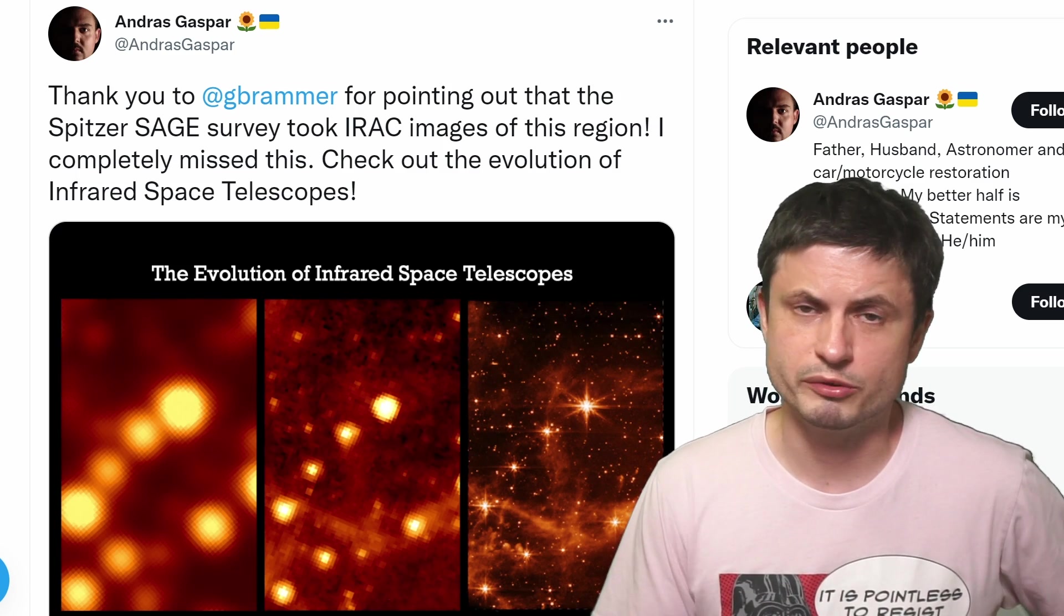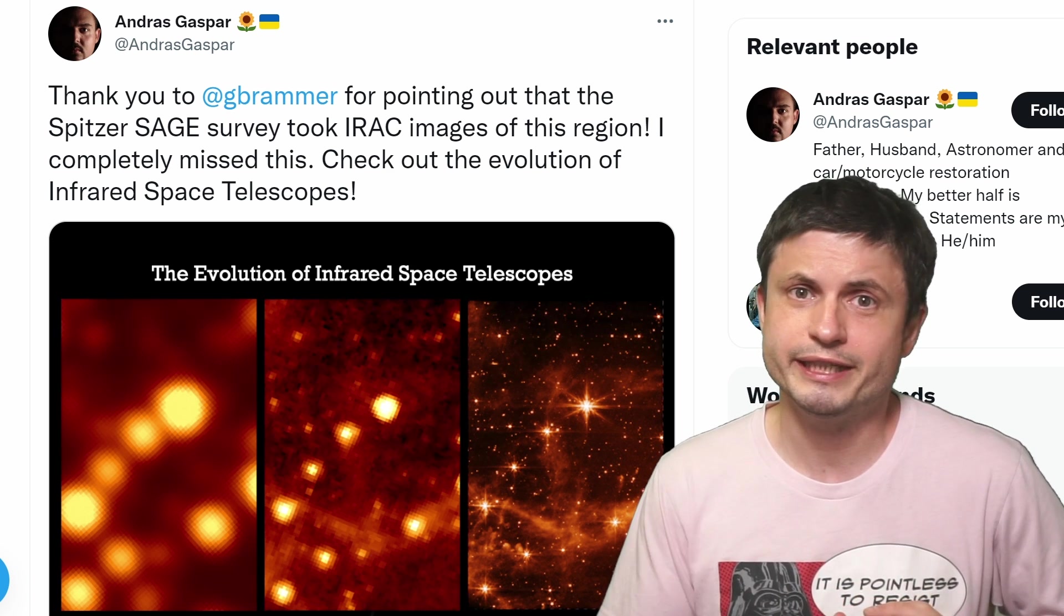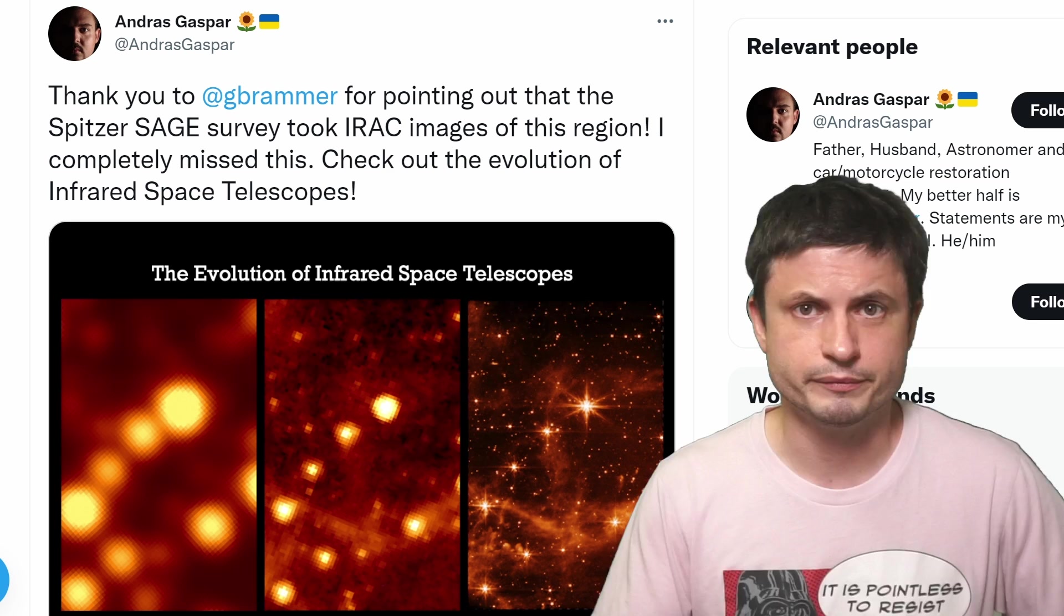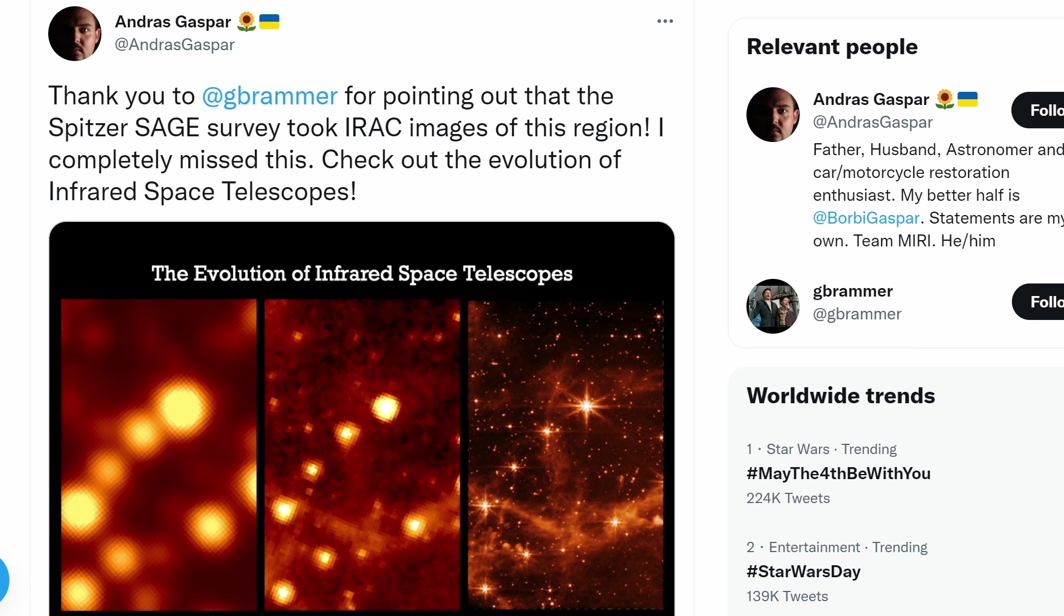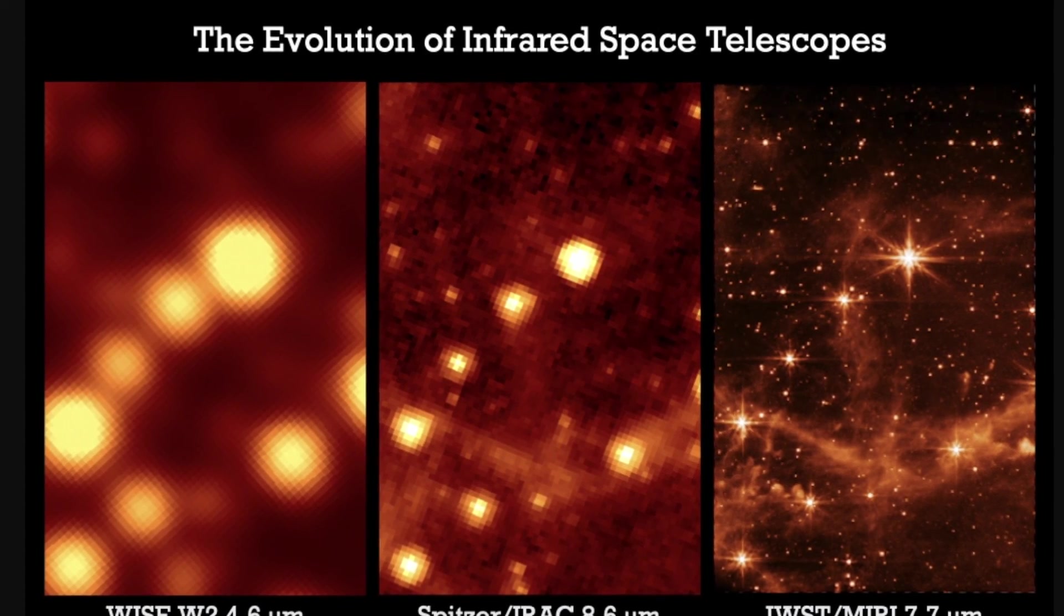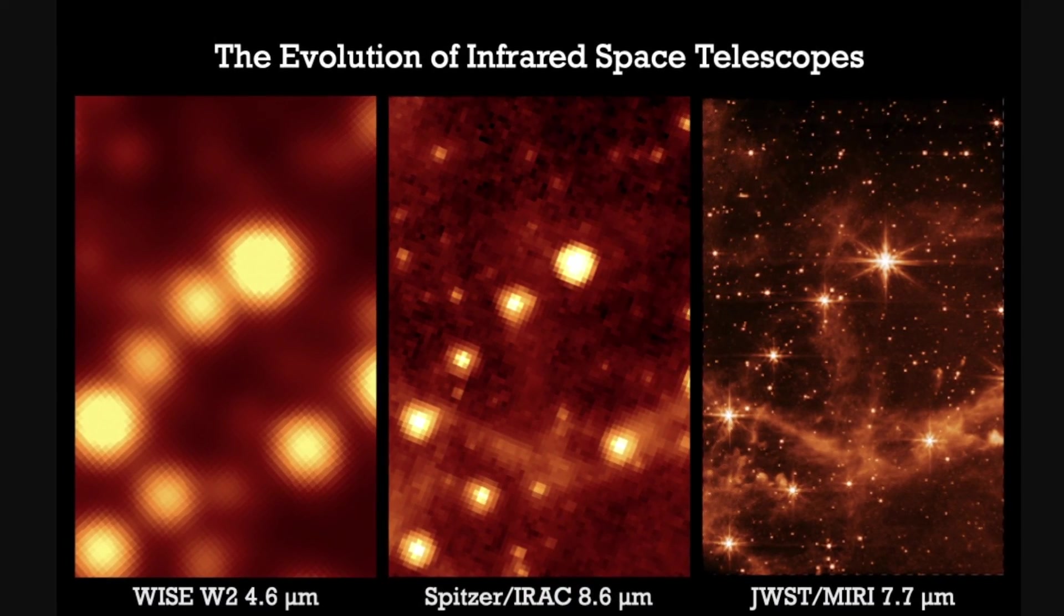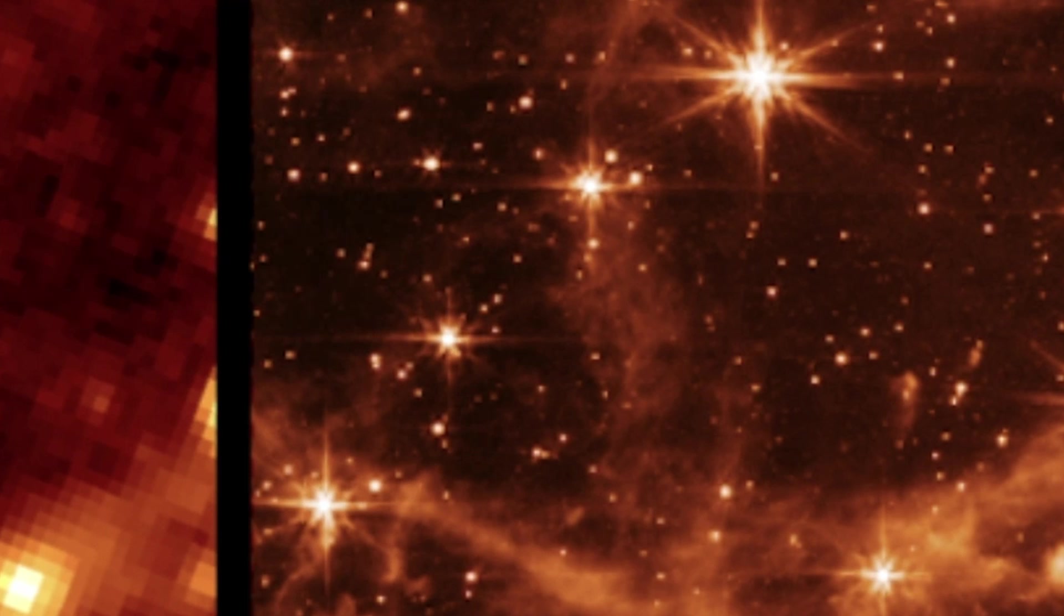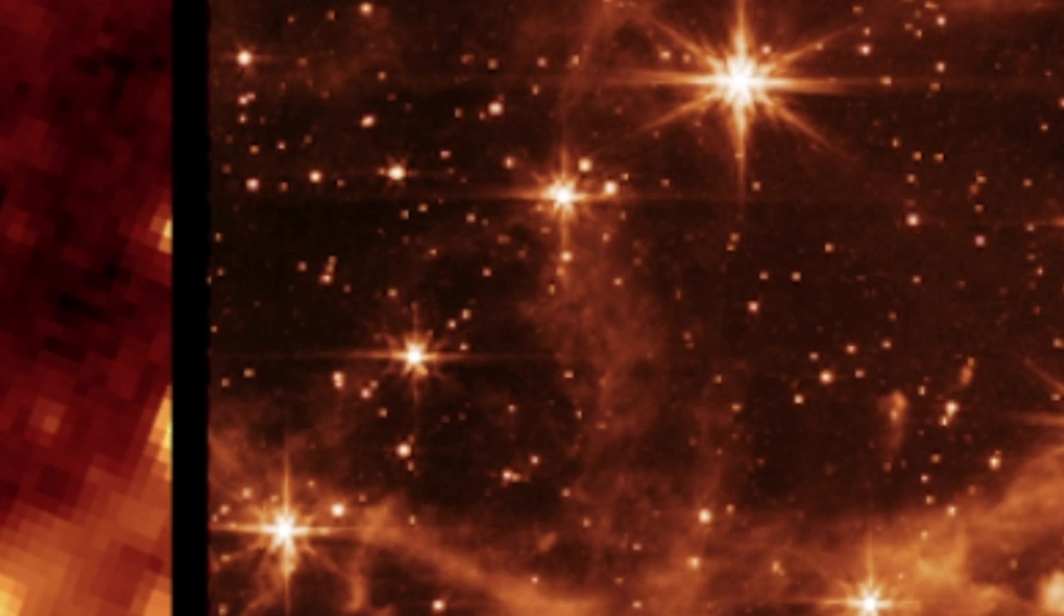And right away a lot of astronomers on twitter started to actually compare this to some of the previous observations from other infrared telescopes with this image by Andres Gaspar being really interesting. Because it perfectly illustrates how far we've gone in just a couple of decades. From the Weiss telescope that was operational approximately a decade ago to Spitzer telescope that was deactivated in 2020 to the now active MIRI instruments from James Webb telescope whose mirror size is roughly around eight times larger than the Spitzer telescope.